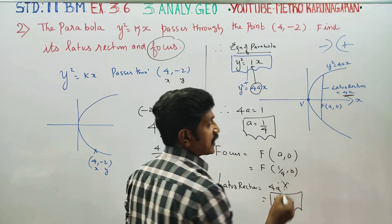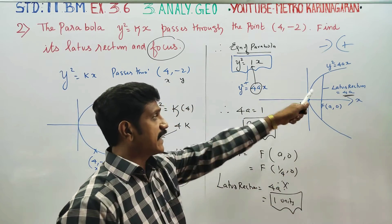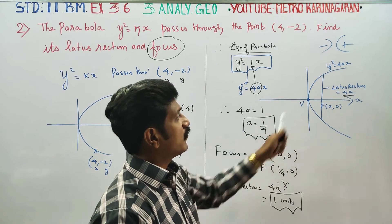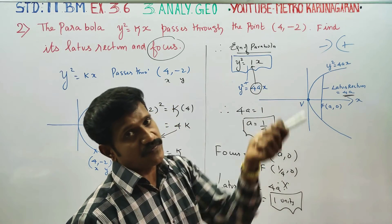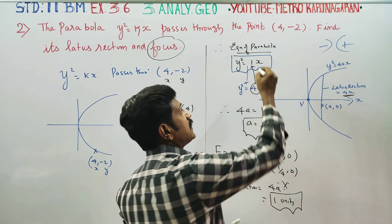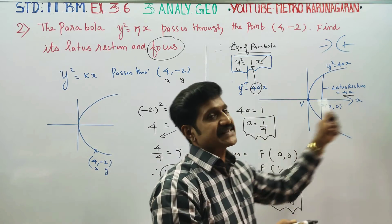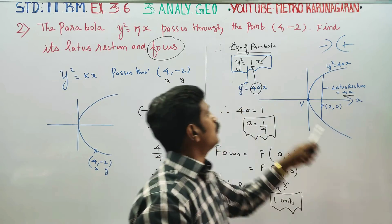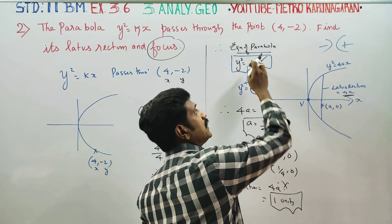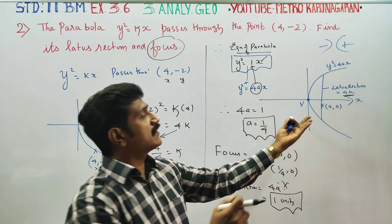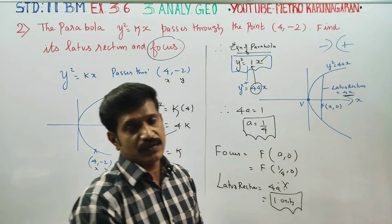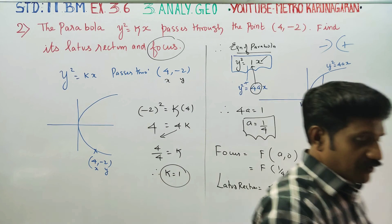The focus formula is (a, 0) and the latus rectum formula is 4a. In this diagram, the x-axis is the axis of the parabola, opening in the positive x direction. If the parabola opens to the left-hand side, the formula changes accordingly. Thank you.